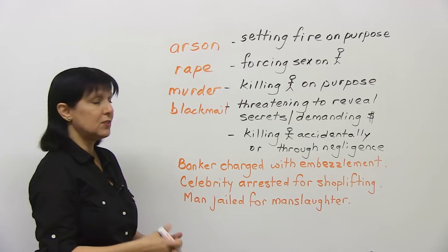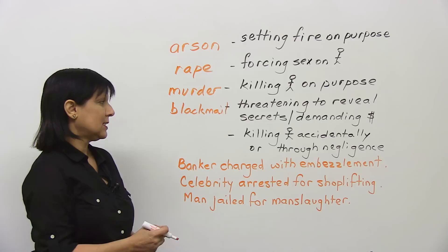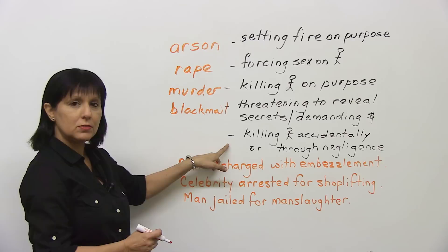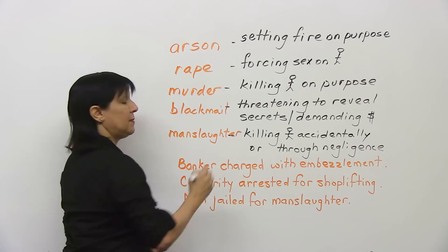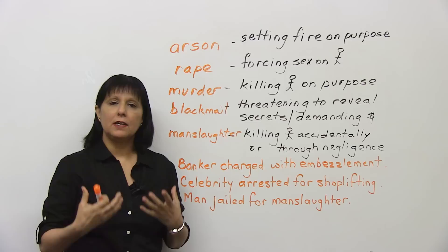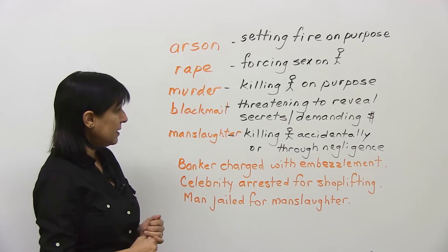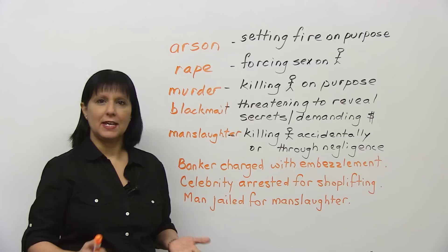Killing someone accidentally or through negligence — what's that? We said killing someone on purpose is murder, but this crime is called manslaughter. Negligence means not paying enough attention to something you are supposed to be paying attention to — for example, if something happens to a child. So these are the first five; we have five more which we're going to look at next.